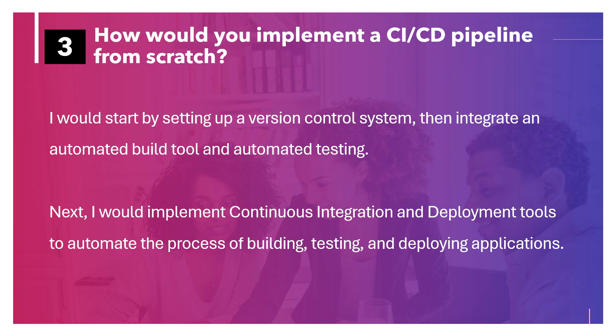How would you implement a CI/CD pipeline from scratch? I would start by setting up a version control system, then integrate an automated build tool and automated testing. Next, I would implement continuous integration and deployment tools to automate the process of building, testing, and deploying applications.